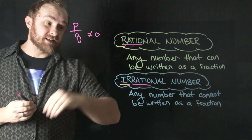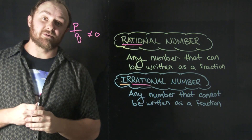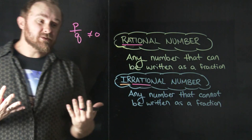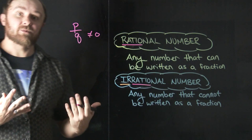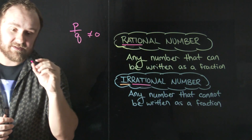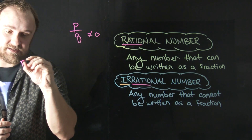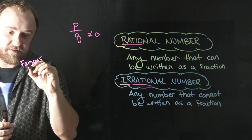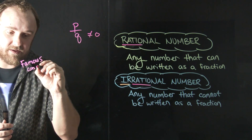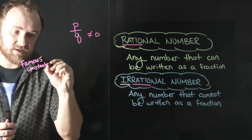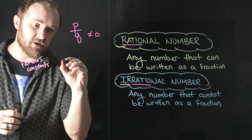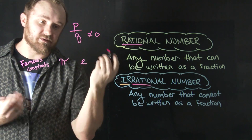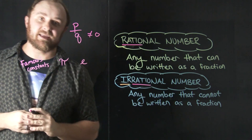And today, we're going to look at some irrational numbers and give some examples of those. They really fall into three categories. We have some famous constants — famous numbers in math that we may be familiar with that are irrational. The most famous of those are obviously pi and then Euler's number, which is denoted by e.